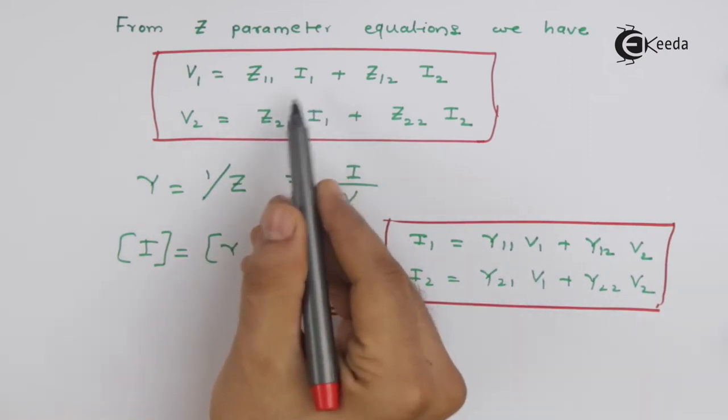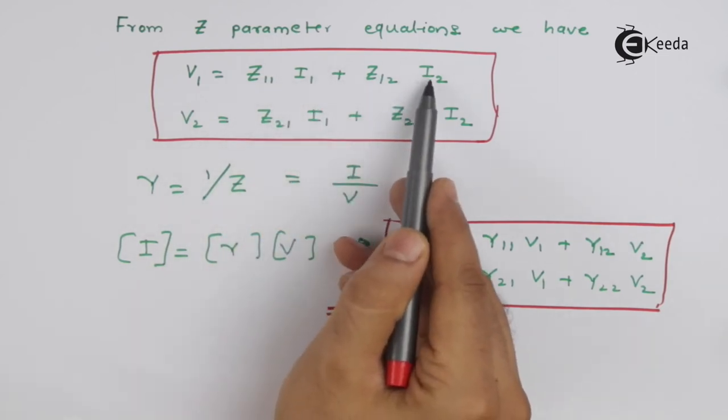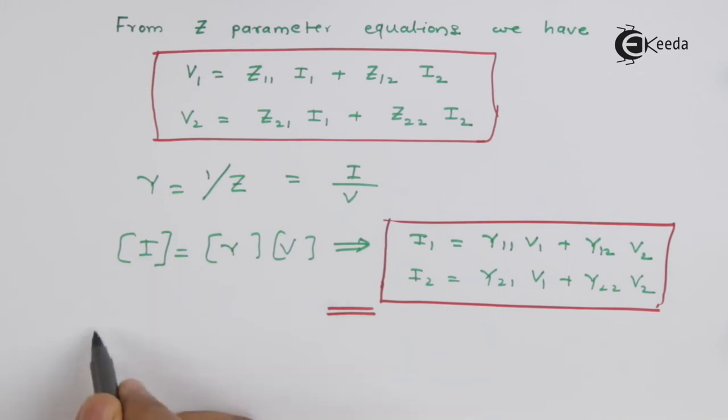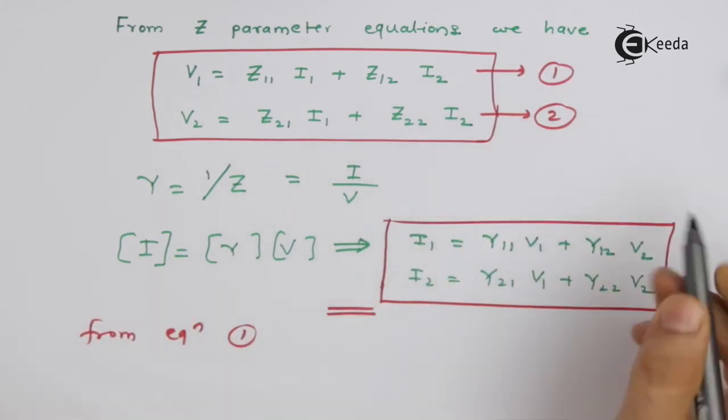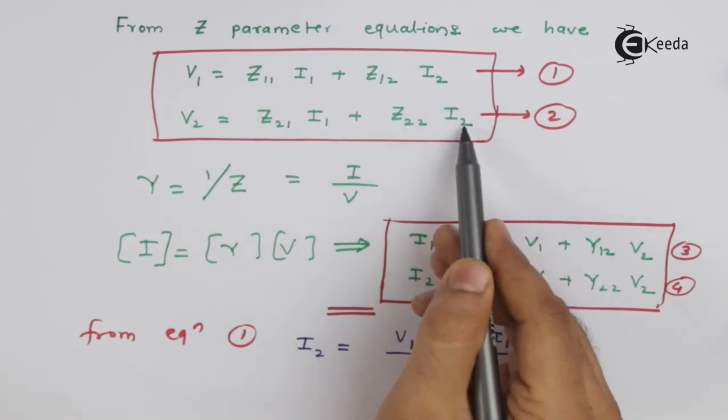So let us start with this equation. From this equation we will get value of I2 and we will substitute that value of I2 here. And this value of I2 we will substitute in equation number 2.